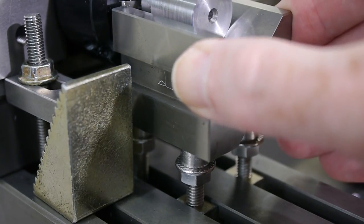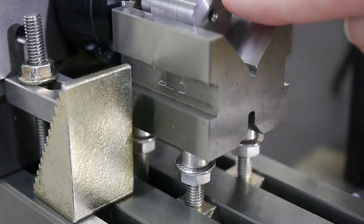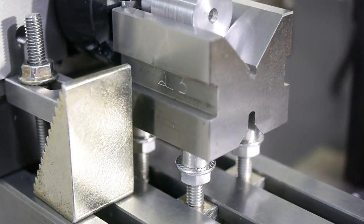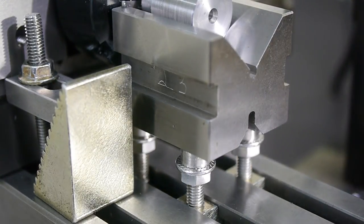It's not critical that the V-block is level, because the V engaged with the curved surface of the part just as well whether it's off-level or not.